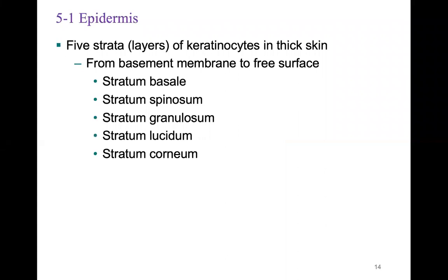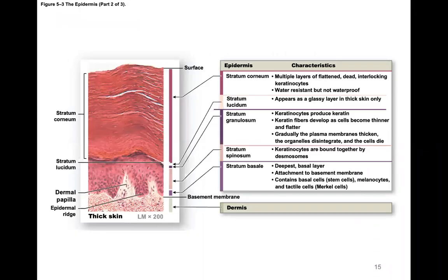There are five layers of keratinocytes in thick skin. From the basement membrane to the free surface: the stratum basale, the stratum spinosum, the stratum granulosum, the stratum lucidum, and the stratum corneum. These layers are covered in a reference table showing their main key points and the importance of each specific layer.